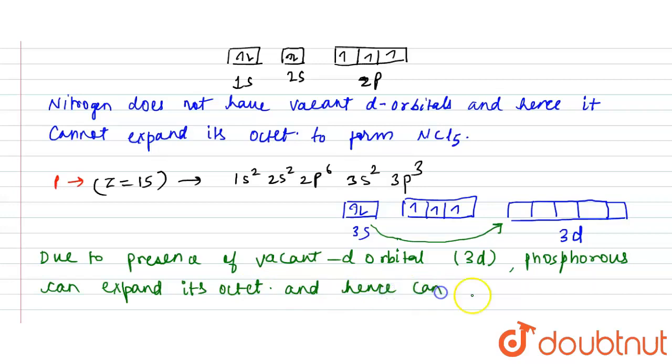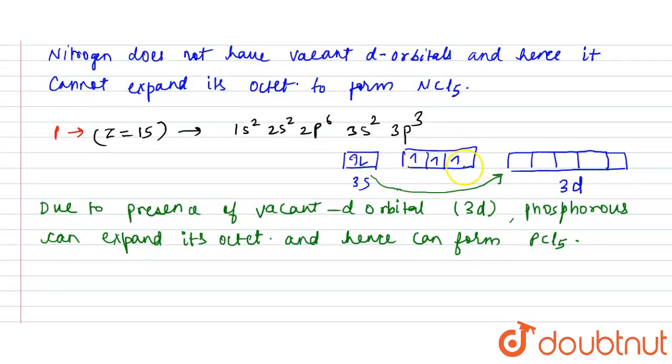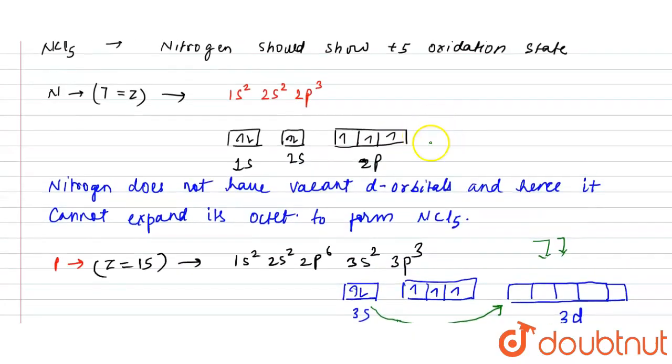Hence it can form PCl₅ with +5 oxidation state. Because if the octet is expanded and excitation takes place, due to the presence of vacant d-orbitals, the oxidation state can be increased and it can form PCl₅. Phosphorus can form PCl₅ but nitrogen cannot.